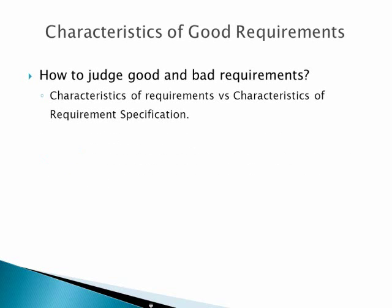It should be clear that characteristics of software requirements and characteristics of software requirements specification are two different things. The meaning becomes somehow different when you are talking about a single requirement versus a set of requirements. Here we will talk about characteristics of a requirement, not about characteristics of SRS — the software requirement specification.